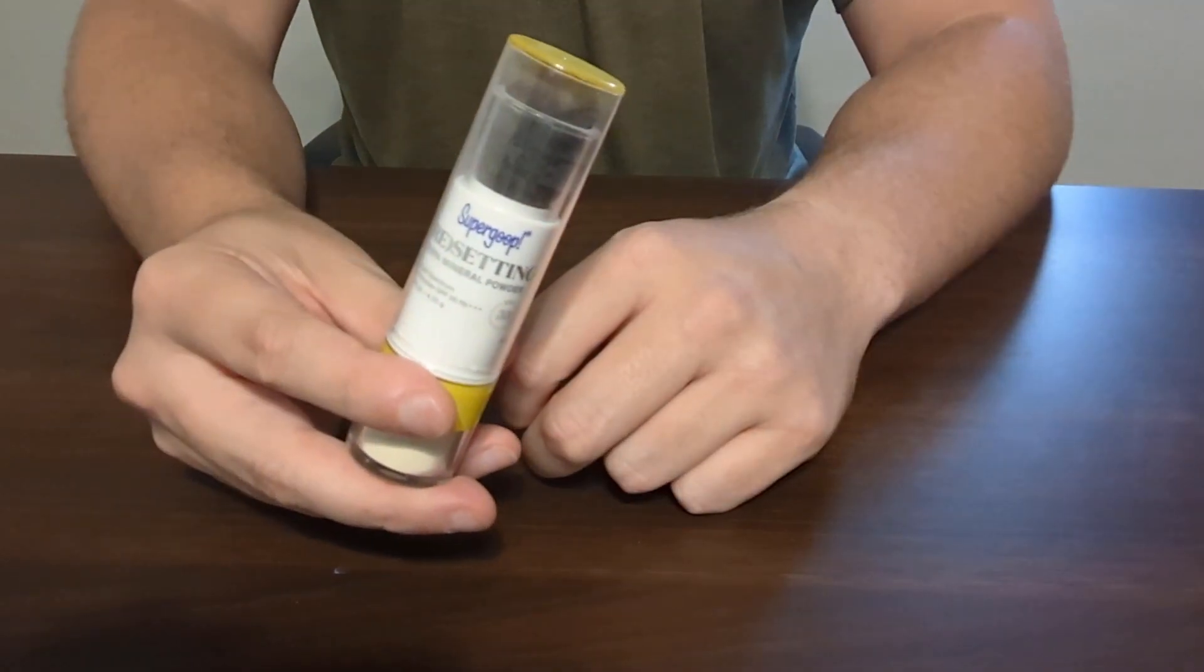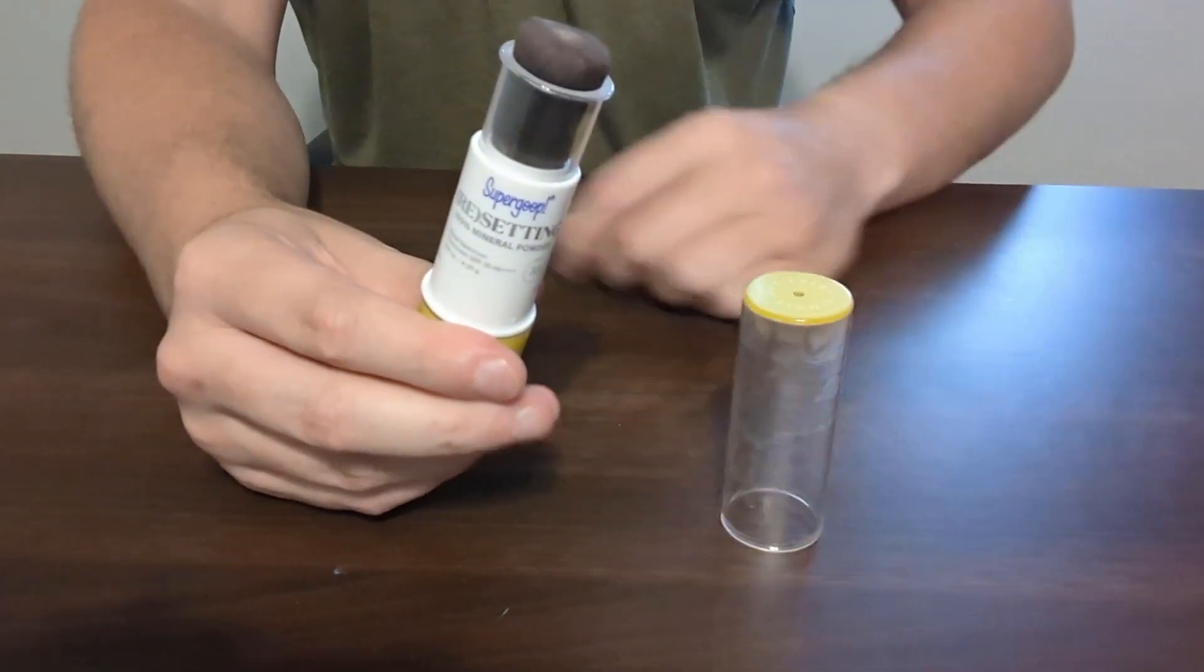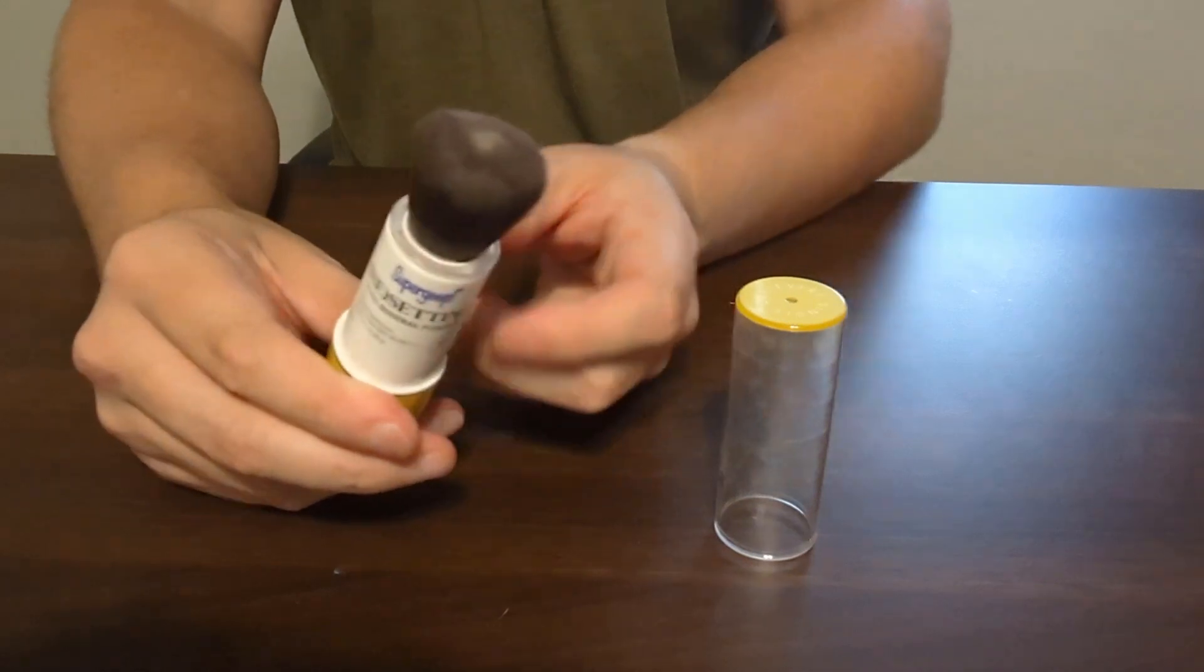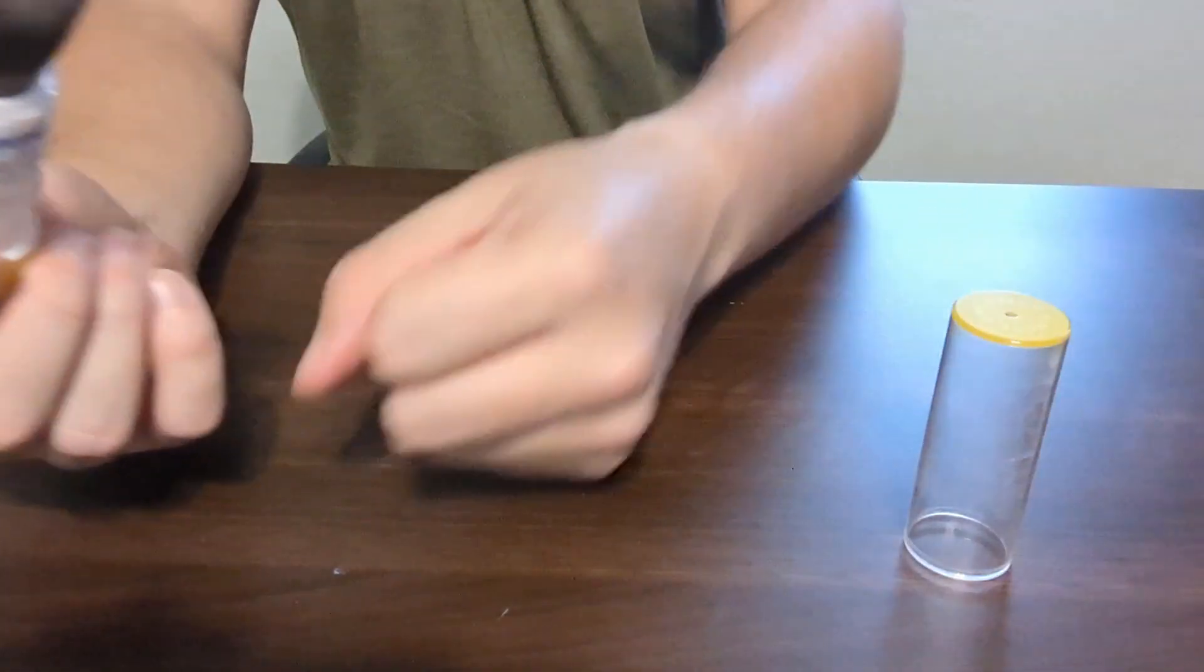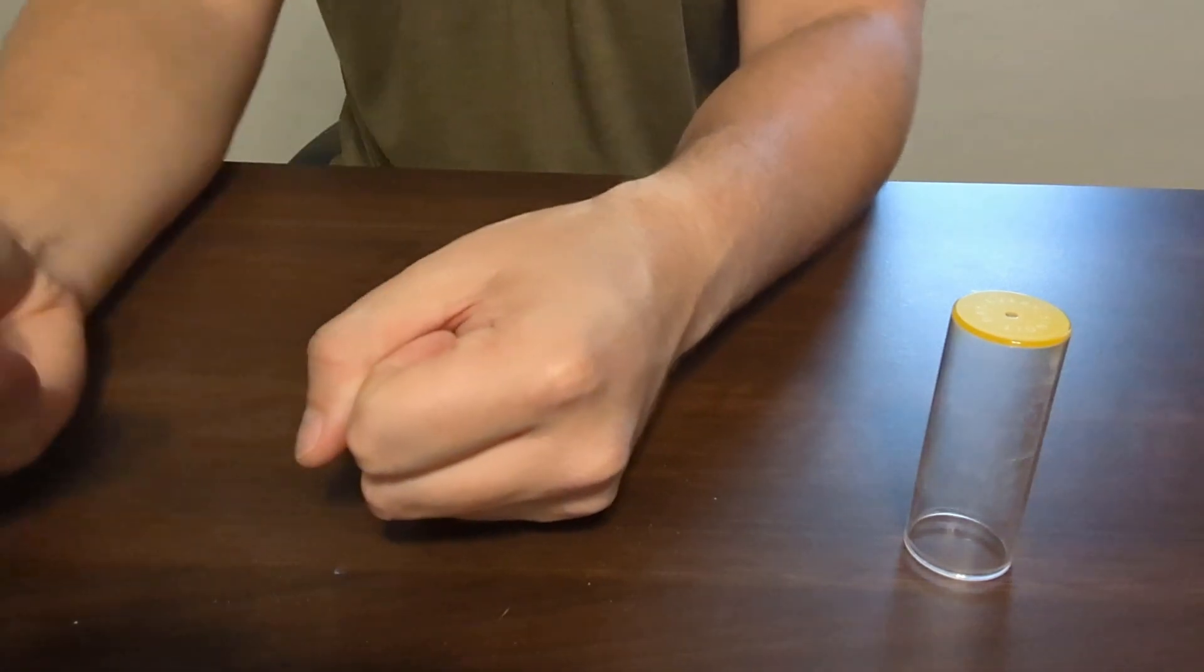In order to apply it, it is fairly easy. What I do is I go ahead, pop off the lid, and then this pushes down so it fans out the brush a little bit, and then you just go ahead and put it on whatever part that you are putting it on.